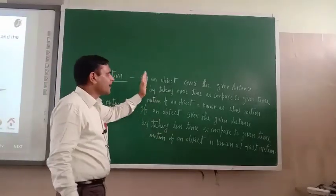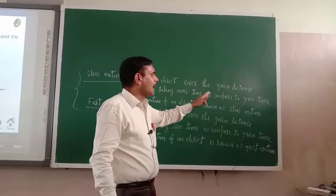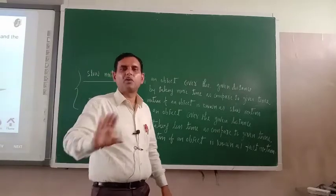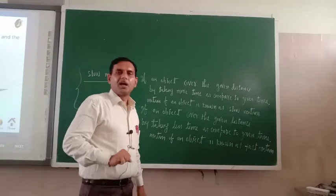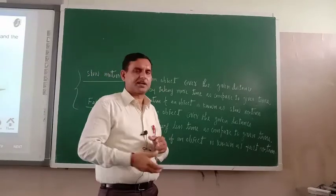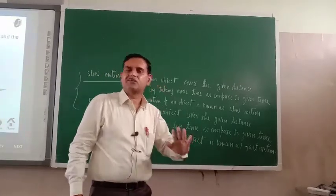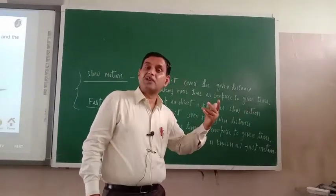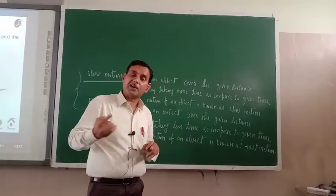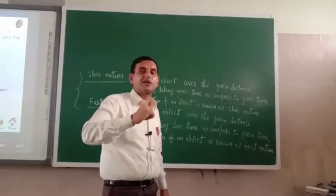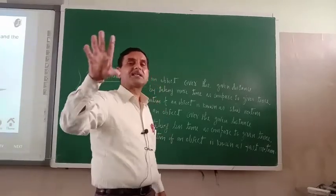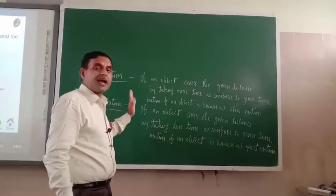Try to understand: if an object covers a given distance by taking more time compared to the given time, we call it slow. Suppose you give one work to a fellow and stipulate that within one hour the work must be finished. If that fellow finishes the work beyond the given time, you will say that fellow is slow. Similarly, suppose another fellow finishes the same amount of work well before the given time — you will say that person is fast.